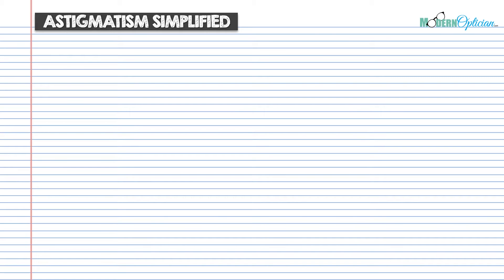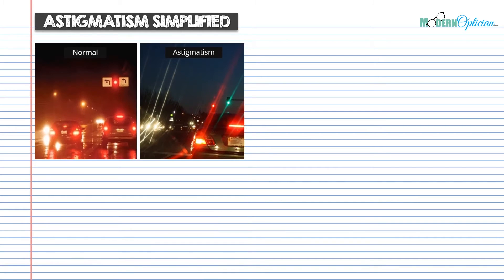We're going to go over astigmatism simplified — a look at what the general consensus is in education as far as what the textbooks are showing you and what the simplified versions are. Astigmatism is usually characterized as blurred vision. You often hear descriptions of distance vision issues. In the image here, normal vision shows headlights looking okay, while astigmatism produces starbursts and flare coming off the lights. This is a characteristic symptom — not being able to see light at night clearly.